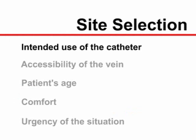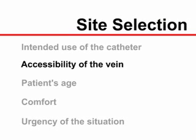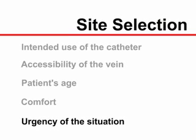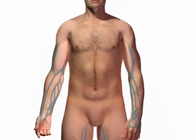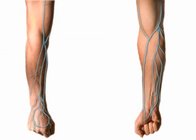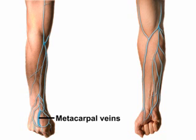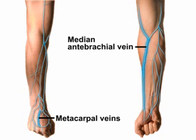Choosing a site for intravenous cannulation depends on many factors, including the intended use of the catheter, accessibility of the vein relative to the position of the patient, the patient's age and comfort, and the urgency of the situation. In general, upper extremity veins are preferred, as they are more durable and are associated with fewer complications compared with lower extremity veins. The preferred cannulation sites are the veins of the forearm, particularly the metacarpal veins on the dorsal aspect of the hand, the median antebrachial vein, the cephalic vein, and the basilic vein.